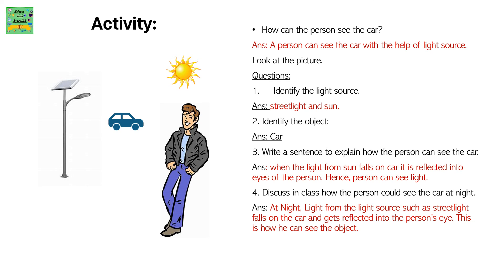Discuss in class how the person could see the car at night. At night, light from a light source such as a street light falls on the car and gets reflected into the person's eye. This is how he can see the object.